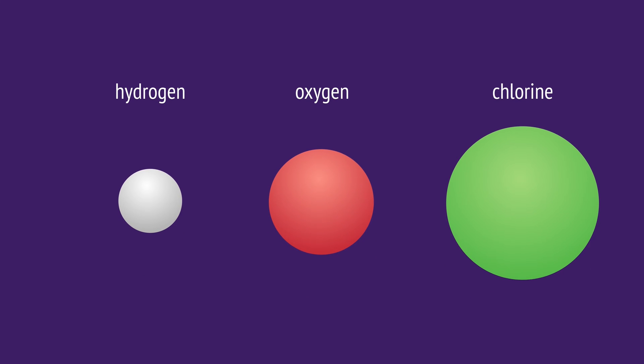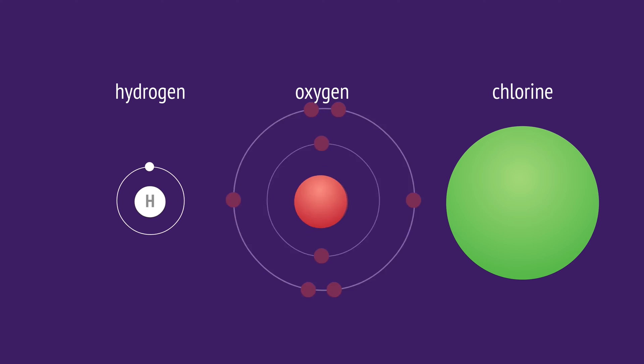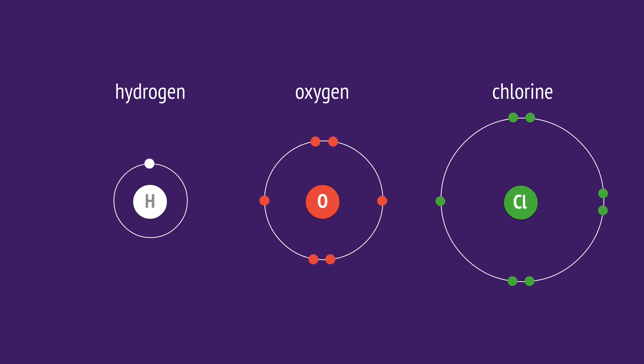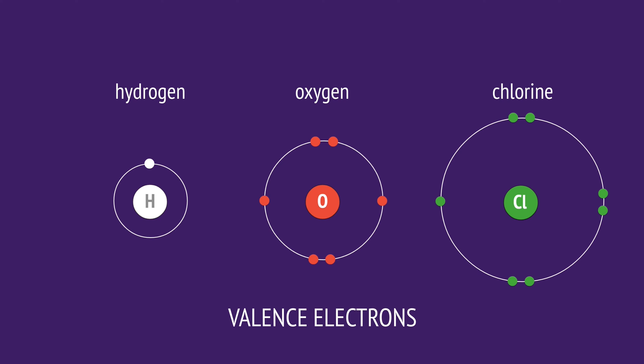Atoms form chemical bonds with other atoms to become more stable, and they form these bonds with their electrons, specifically their outermost, or valence, electrons.